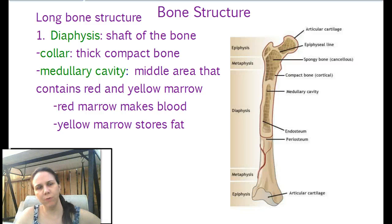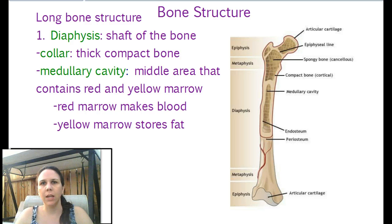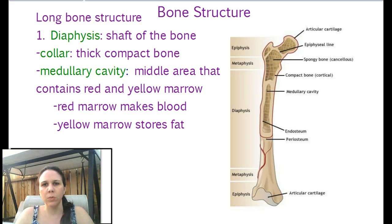Alright, here's the next one. 4-3, bone structure. So we're going to start out with anatomy of a long bone, and then we're going to do flat bones. We don't typically get into the bone structure of the other ones because they're all made up of the same stuff. So we're going to start with a typical long bone, which would be like a femur — we're going to use this femur right here.